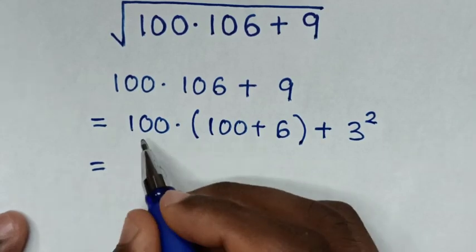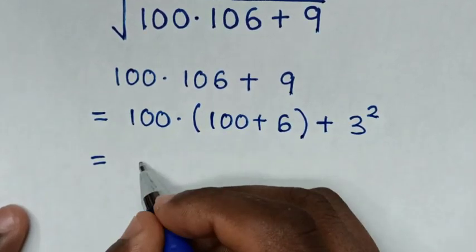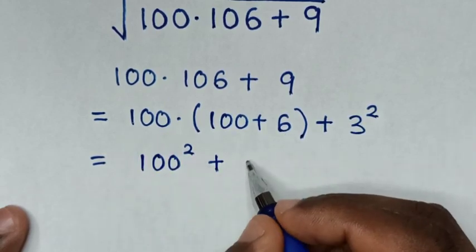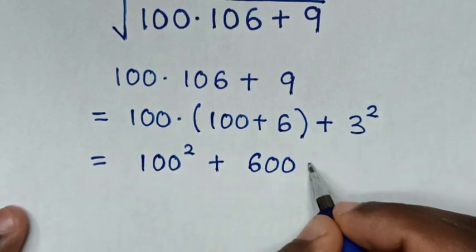it will be equal to 100 times 100 is 100 squared, then plus 100 times 6 is 600, then plus this 3 squared.